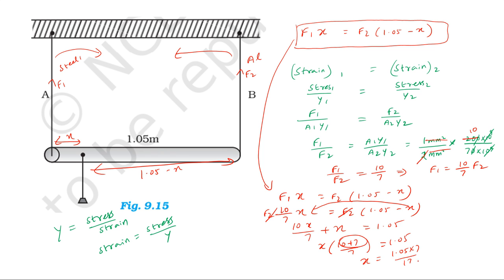After F2 cancels, solving the equation gives the position for equal strain condition. The strain in the steel wire equals the strain in the aluminium wire, and the suspension point is determined from this system.